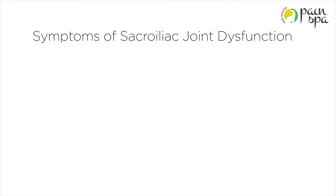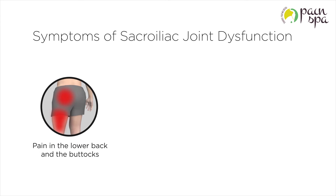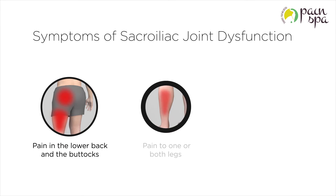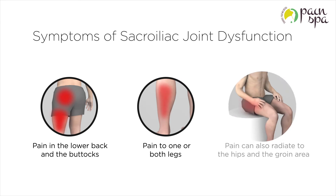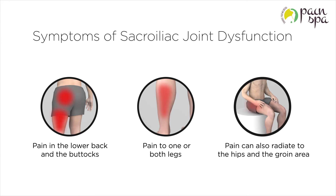Symptoms of sacroiliac joint dysfunction include pain in the lower back and the buttocks, radiation of pain to one or both legs, and pain can also radiate to the hips and the groin area.